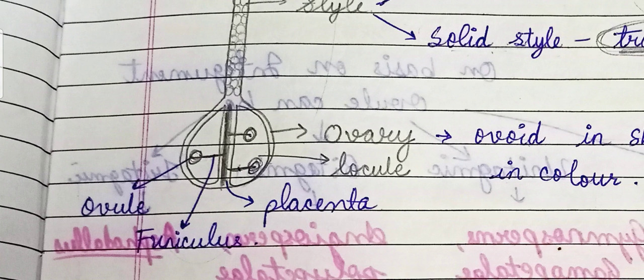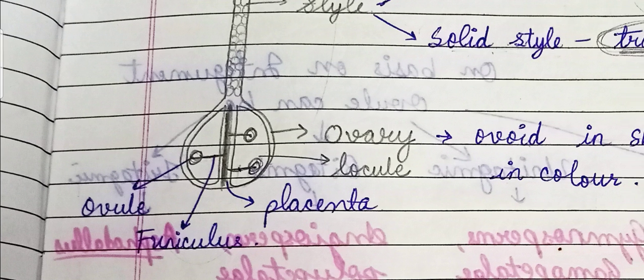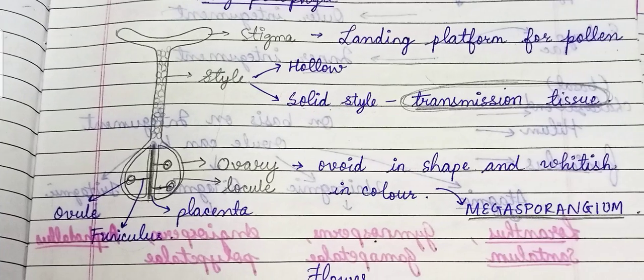The ovule is connected with the placenta by a short tubular structure called the funicle. Comparing with the human body, the ovule connects with the placenta and the funicle serves as the umbilical cord, through which nourishment is supplied.